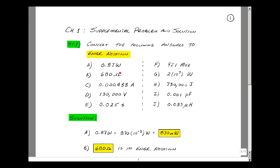0.87 watts, 680 ohms, 0.000433 amps, 130,000 volts, 0.025 seconds, 92.1 megahertz, 2 times 10 to the 7th watts, 730,000 joules, 0.001 picofarads, and 0.033 microhenries.